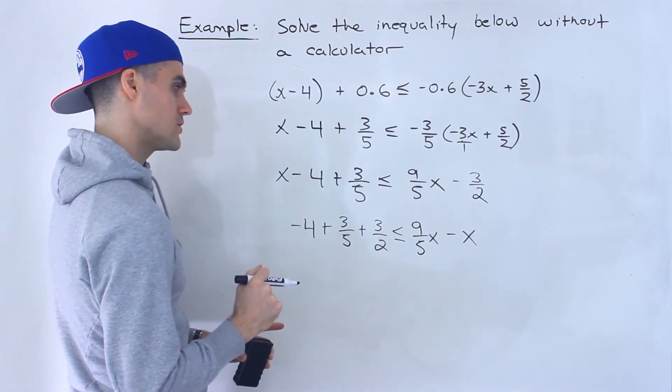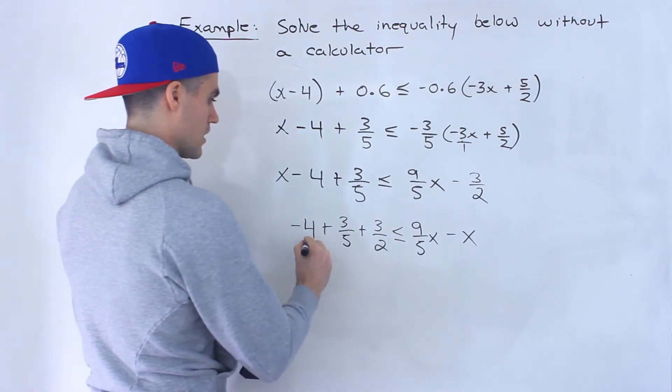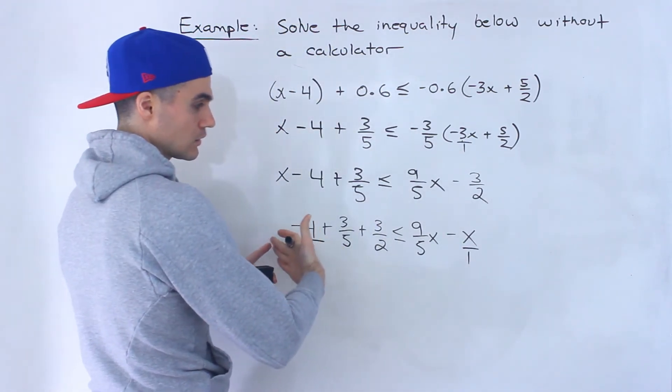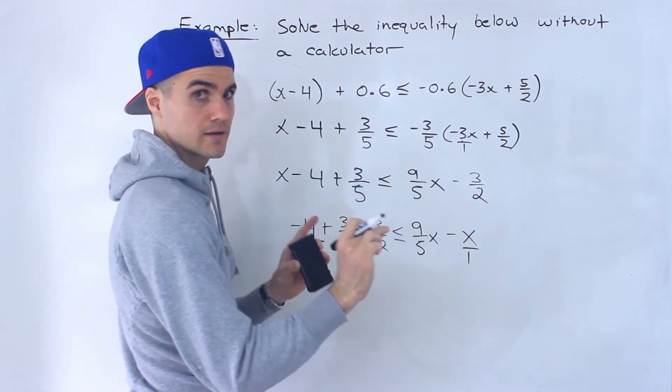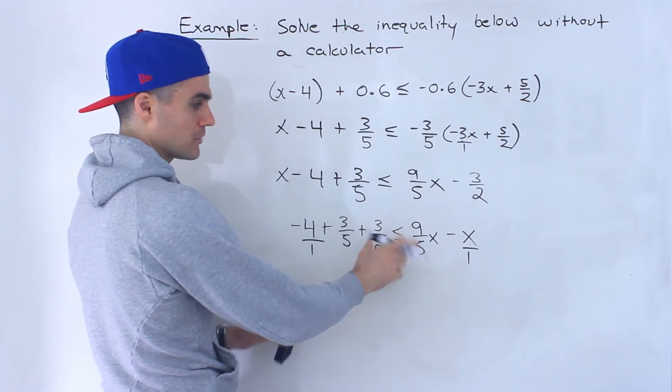And then from here, you can work with these fractions. Personally, what I'm going to do is I'm actually going to multiply everything by the lowest common denominator to get rid of the fractions. Just make sure that that value you're multiplying is positive.